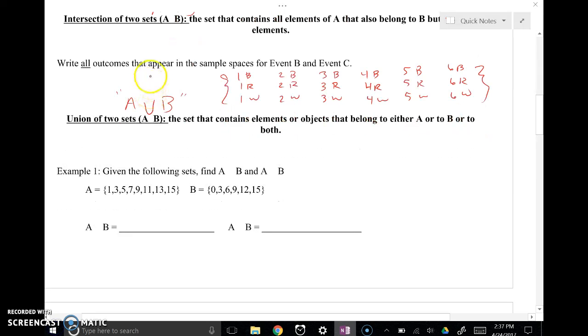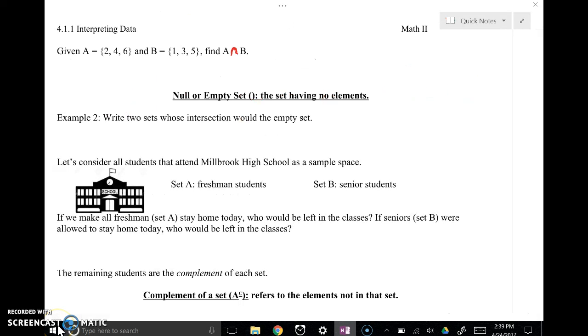The symbol for union is right here, this U, uppercase U in between the two sets. Next concept is this idea of null or empty set.